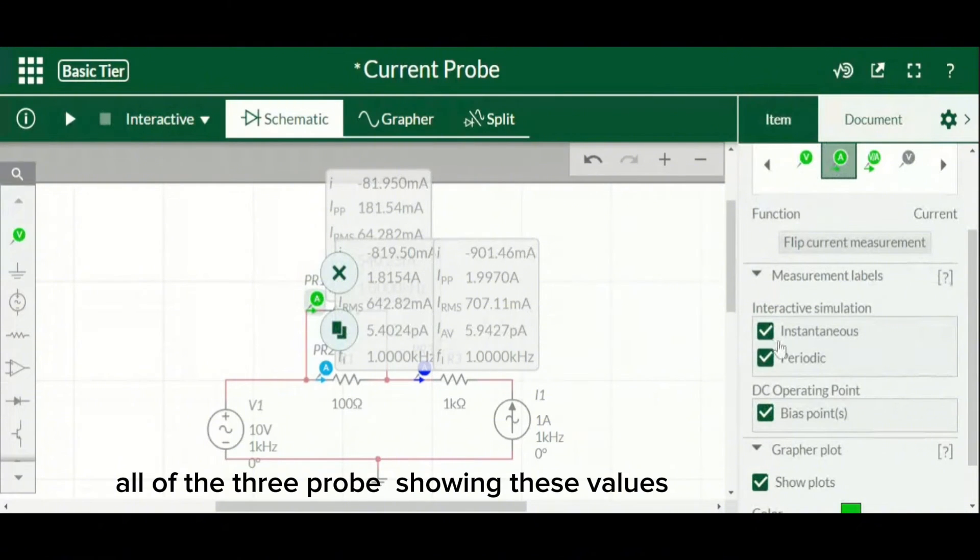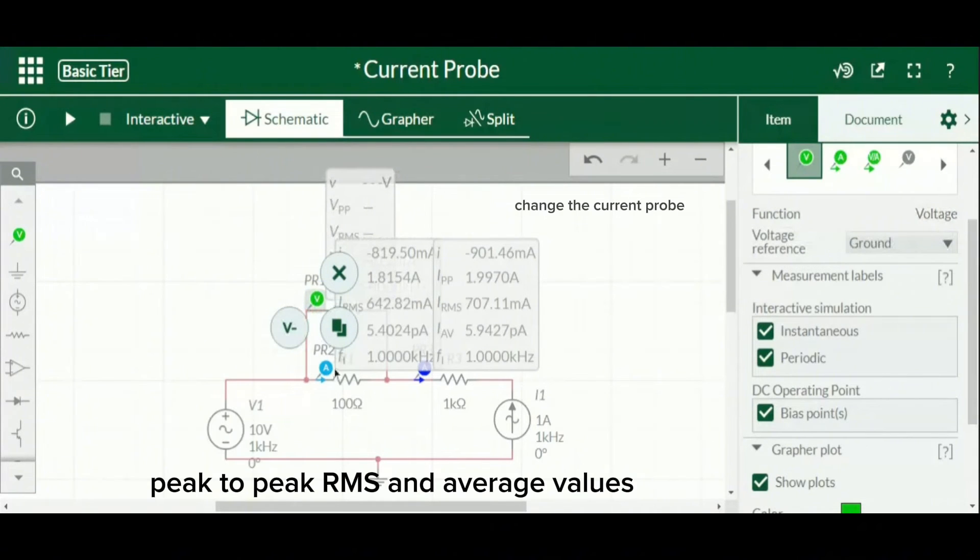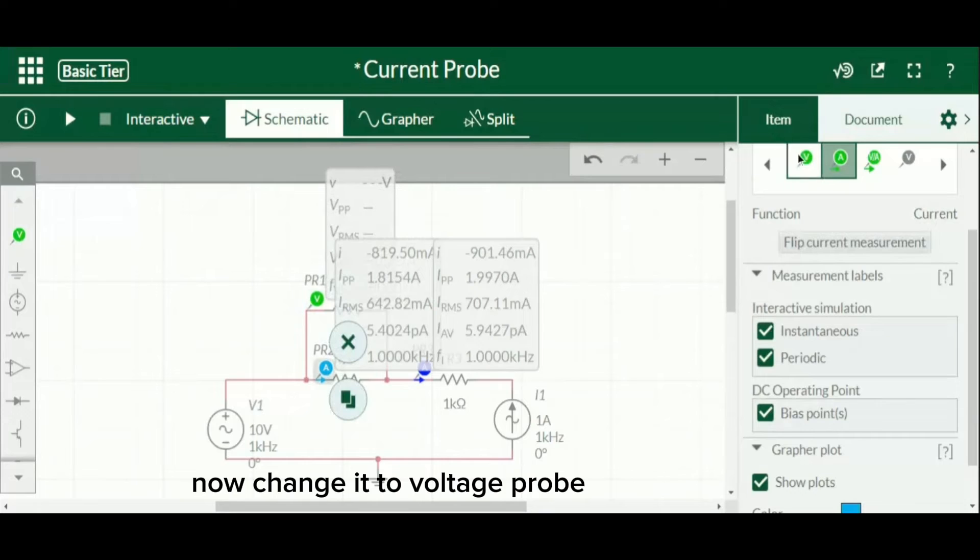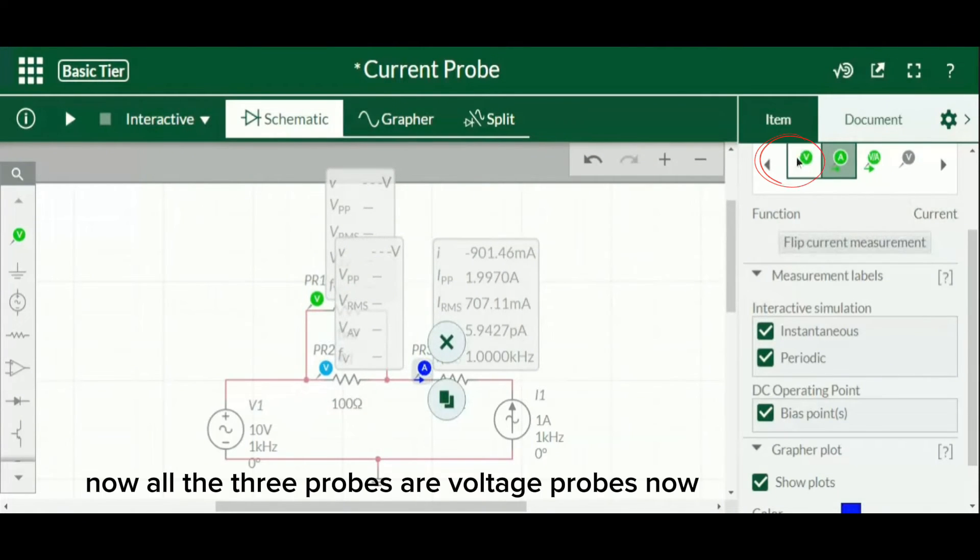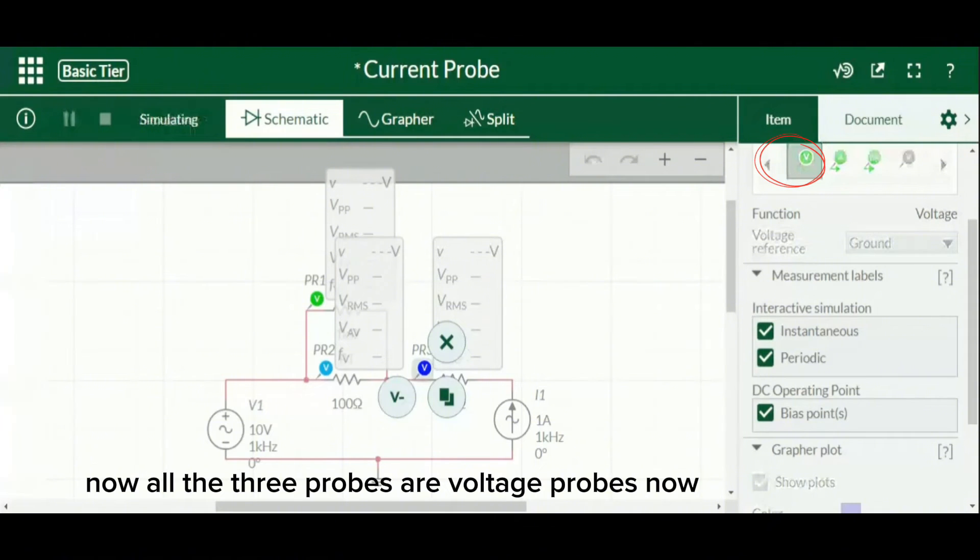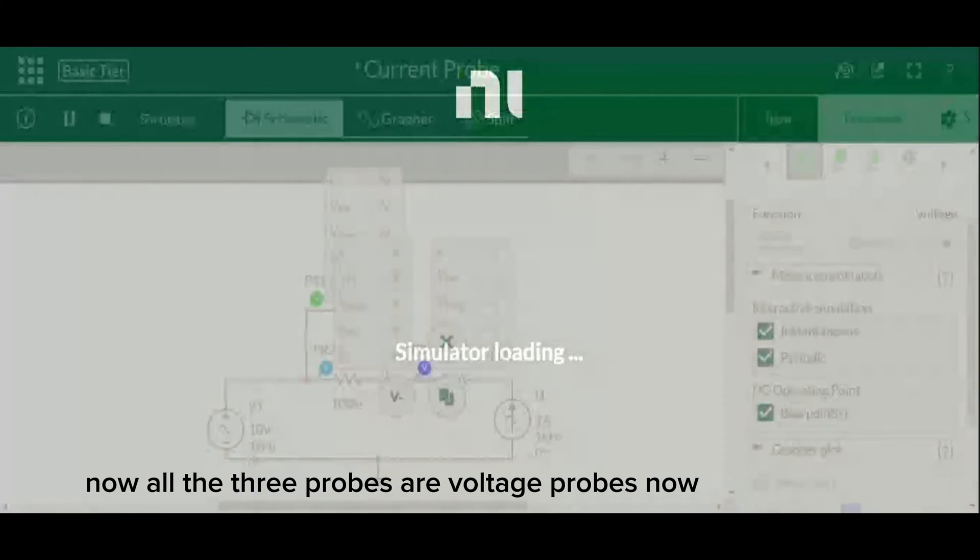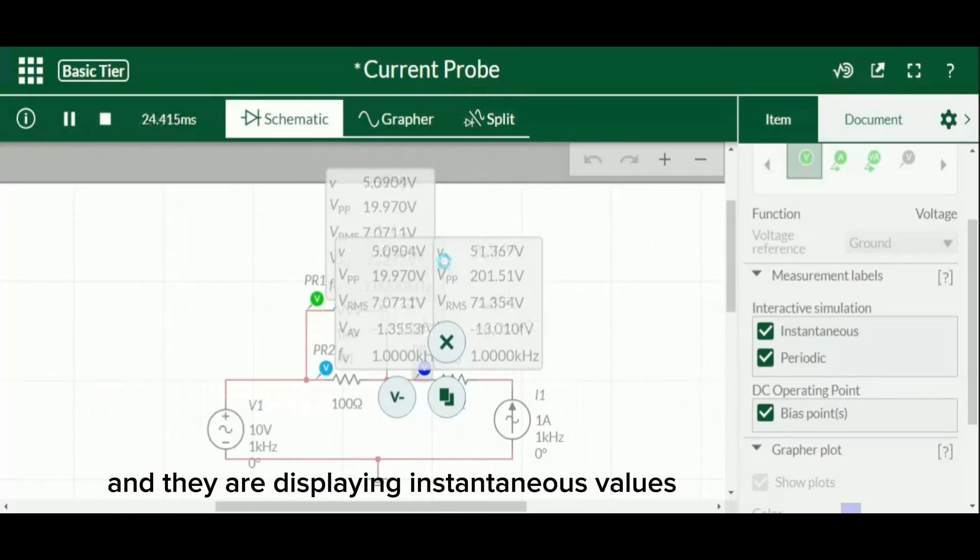Now change to voltage probe. Now all the three probes are voltage probes, and they are displaying instantaneous values, peak-to-peak RMS voltage, and average voltage and the frequency.